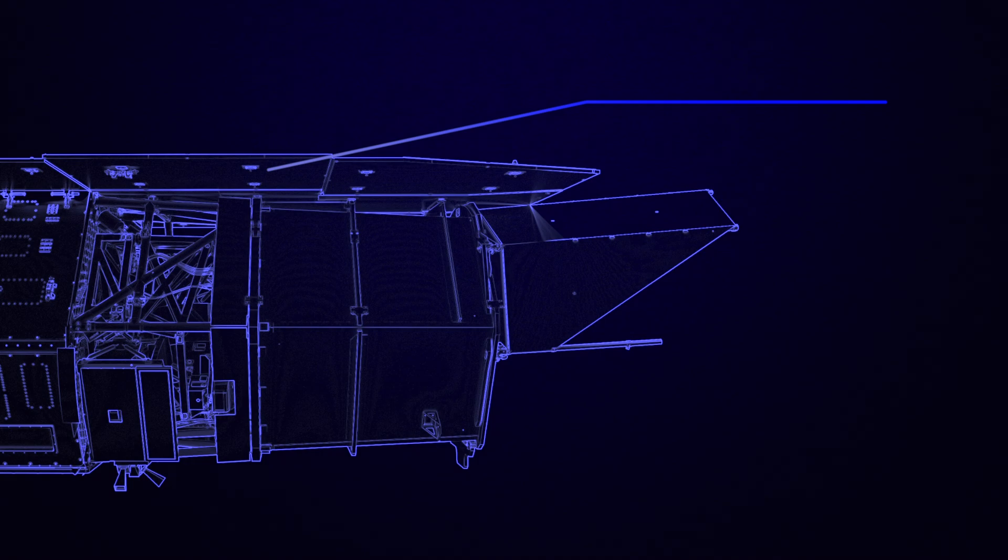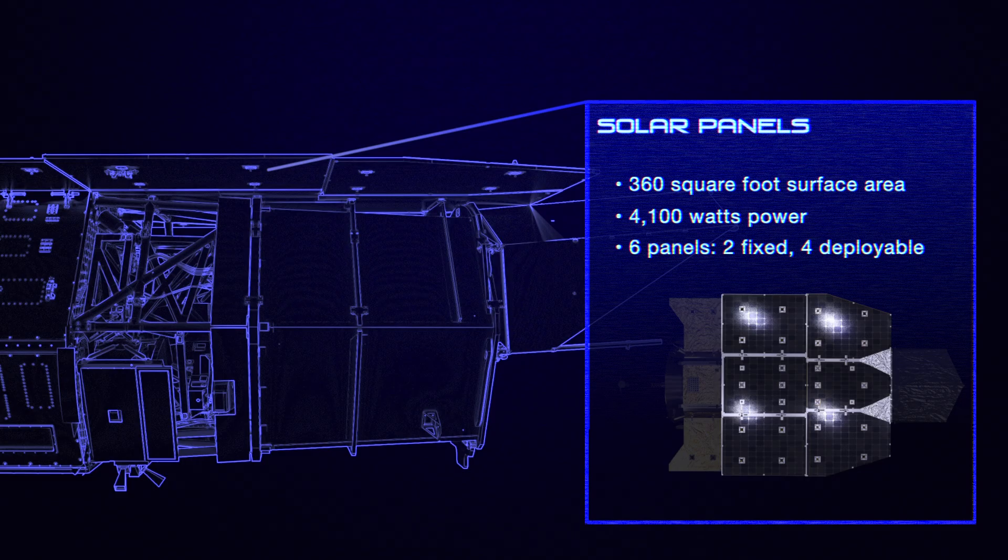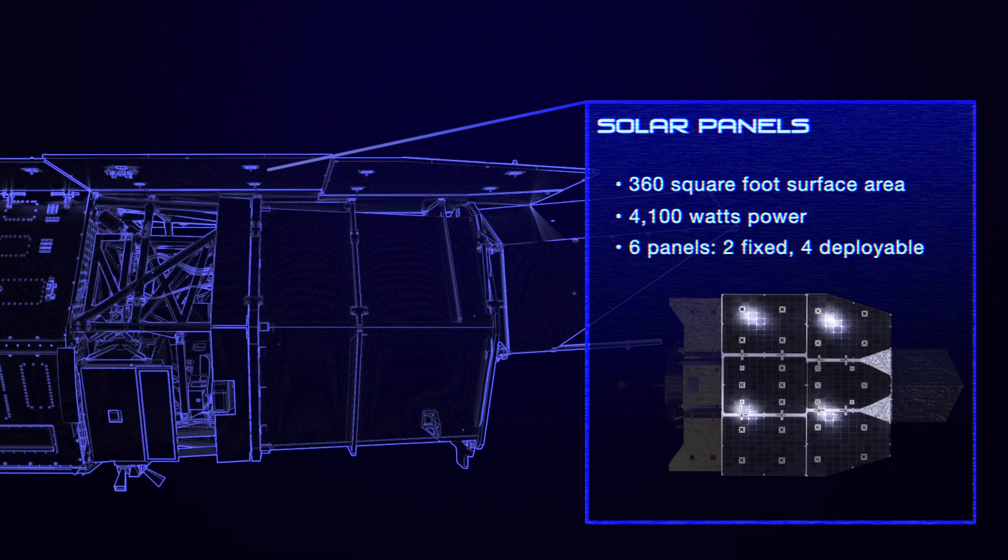The spacecraft's solar panels provide its power by converting sunlight into electricity. They also shade the spacecraft, helping to keep its instruments at their design temperatures. The solar panels will be able to provide 4,100 watts of power, enough to run two commercial microwave ovens.